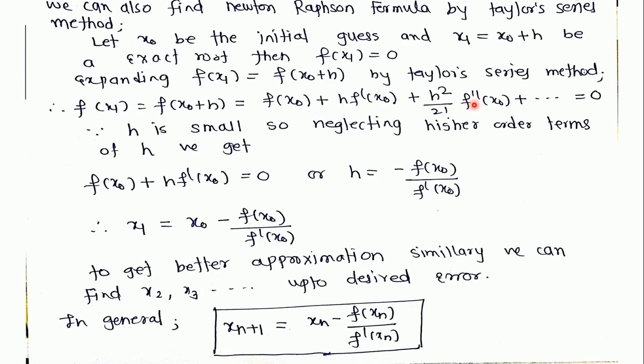As value of h is very small then h square upon 2 factorial, h cube upon 3 factorial, all the terms of h square are very small. We are neglecting these terms. Then we get f(x0) plus h times f'(x0) equals 0. Rearranging the terms we are finding the value of h which equals minus f(x0) upon f'(x0). We are just substituting this value in this equation. Then we get x1 equals x0 minus f(x0) upon f'(x0).